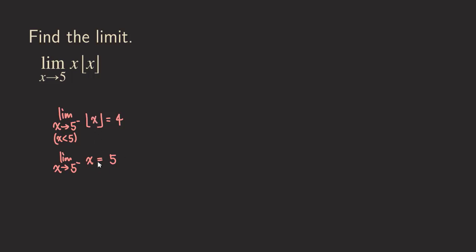Because both limits exist, we can put them together. We are still talking about the one-sided limit here, but when we multiply them together, we get x times the floor of x. So we get 4 times 5, which gives us 20.